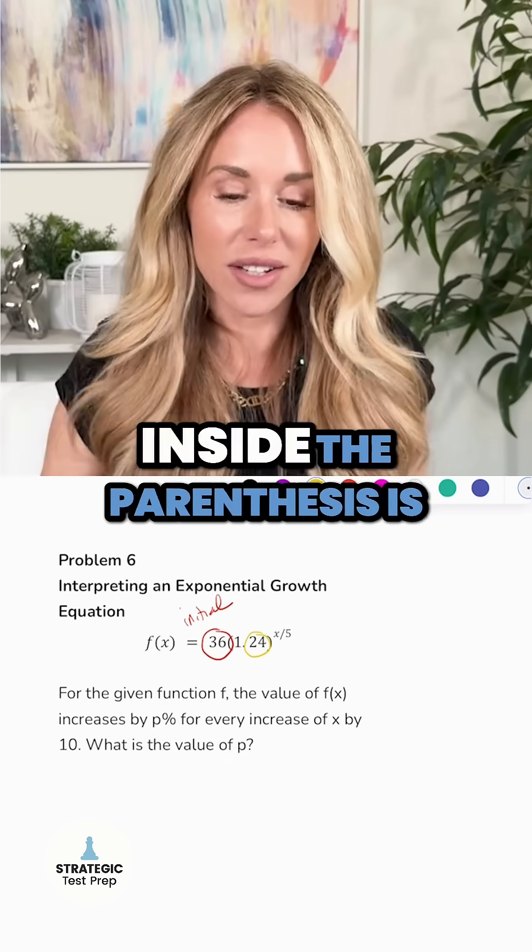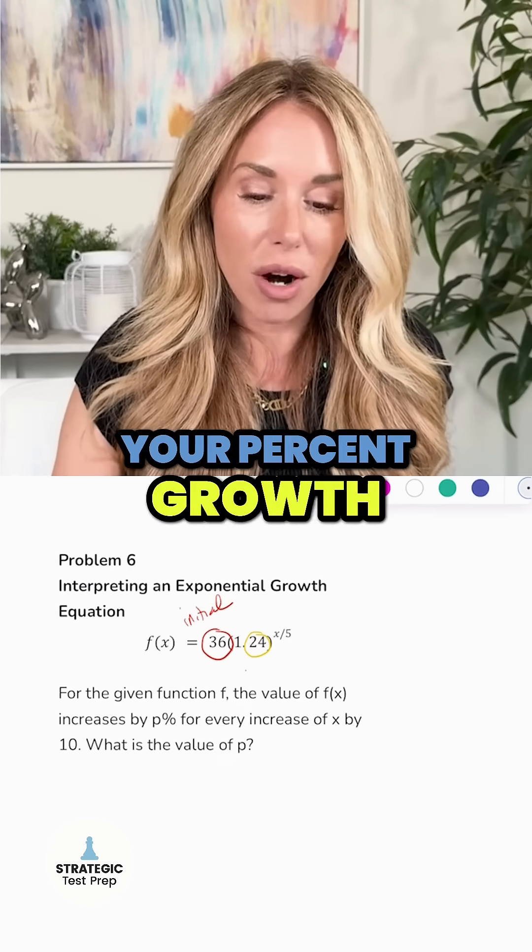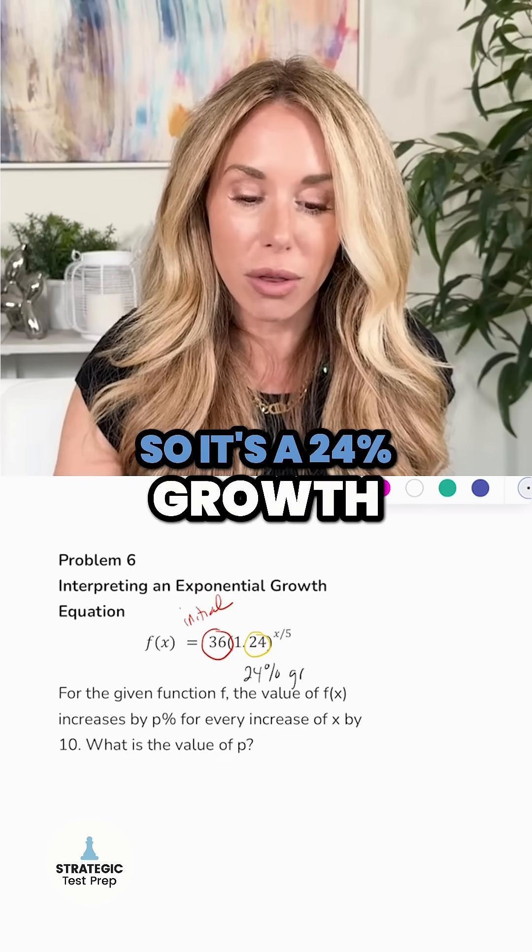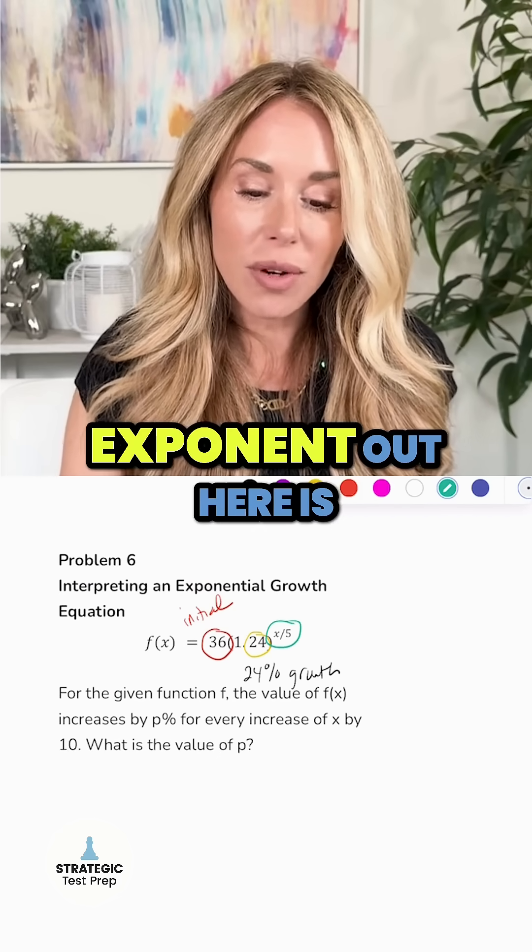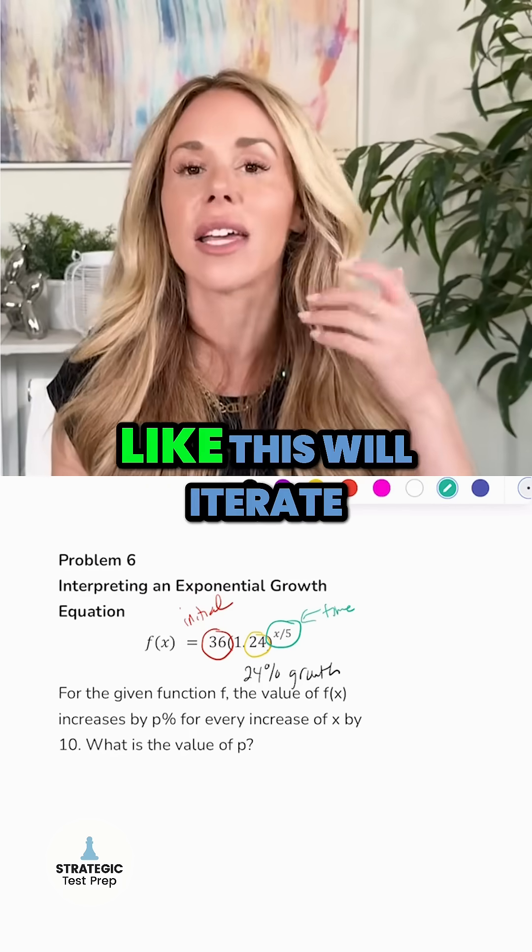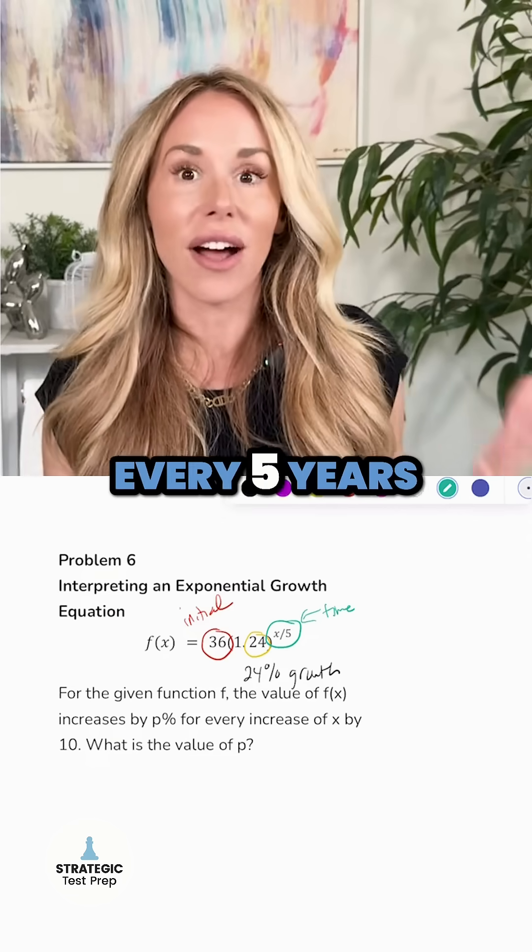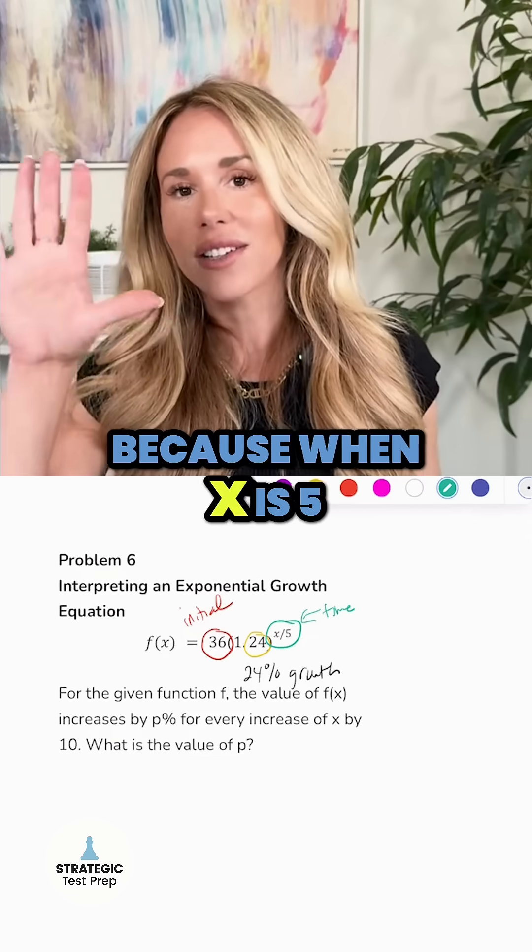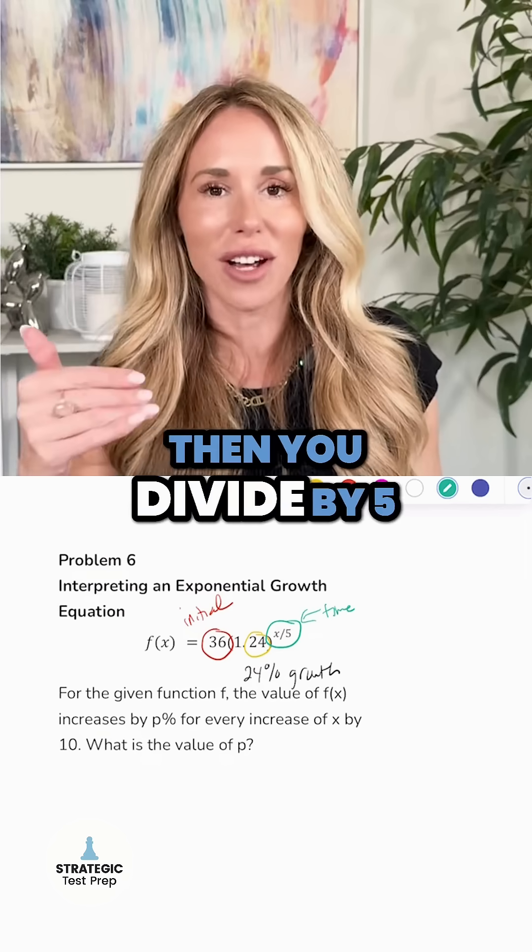The number that's the decimal part inside the parentheses is your percent growth, so it's a 24% growth. And then the exponent out here is the time. So you know x is in years, so it looks like this will iterate every five years because when x is 5, meaning five years, then you divide by 5, you get one iteration.